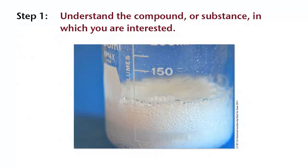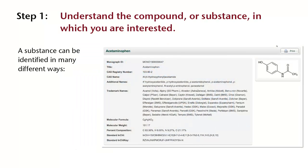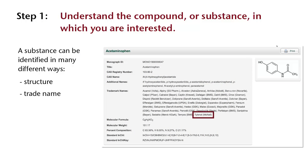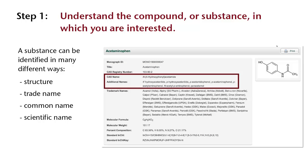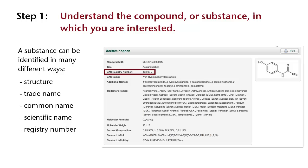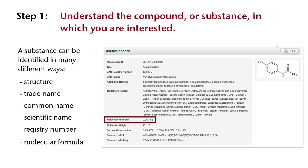Step 1: Make sure that you know and understand the compound or substance in which you are interested. Be aware that a substance can be identified in many different ways: its structure, its trade name, its common name, its scientific name, its registry number, or its molecular formula.